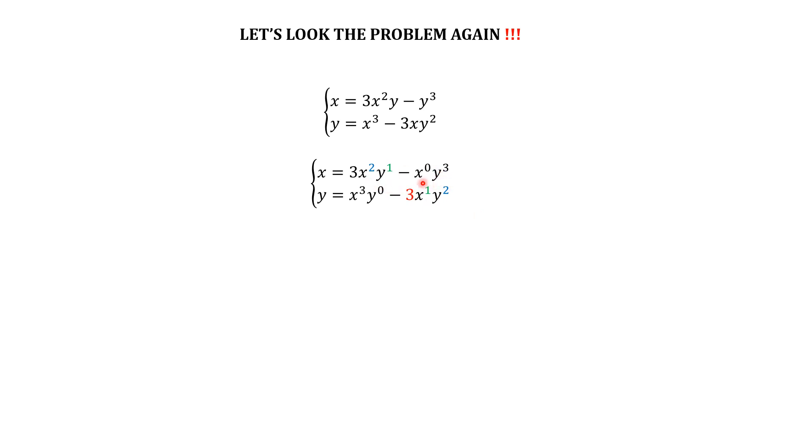Also, the coefficients 3 minus 3, 1 minus 1, seem to be binomial coefficients up to a sign. That is, all the right terms look like the ones of a binomial development. So, we apply Newton's binomial formula for (x + y) raised to the power 3. It gives us this outcome.